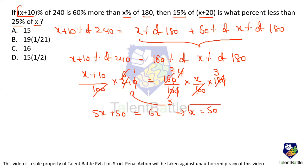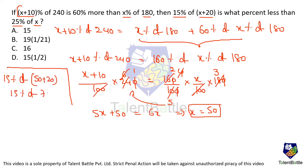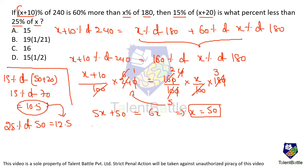We got X equals 50. Now what's our question? 15% of X plus 20. 15% of X is 50; 50 plus 20 means 70. So 15% of 70, which is 10.5. Now 25% of X: X is 50, so 25% of 50 is 12.5. They are asking how much less 10.5 is than 12.5.